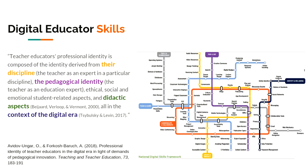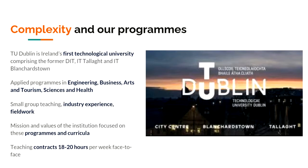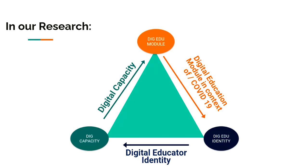To add another aspect of complexity, our institution recently became the first technological university in Ireland, comprising the former DIT, IT Tallaght, and IT Blanchardstown. In this university project, mission and values focus their programs and curricula. Our diversity of disciplines such as engineering, business, arts, tourism, science, and health, and most lecturers coming from fieldwork with contracts around 18 to 20 hours weekly, are part of this reality. So our research variables were defined as digital capacity in a recent institution, the digital education model in the context of COVID-19, and digital educator identity as a complex process.